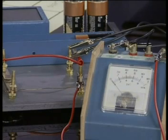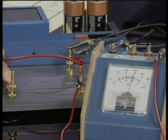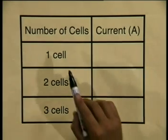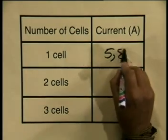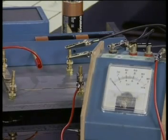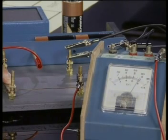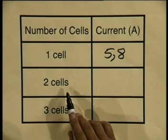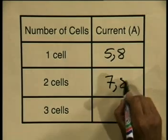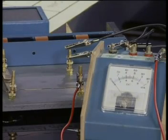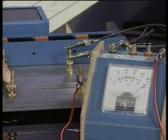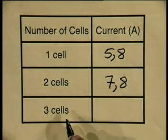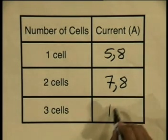I'm going to start by using one cell, I close the switch, and we can see that our current reading is round about 5.8 amperes. For our thicker copper wire using one cell, we have a reading of 5.8 amperes. Now I've placed two cells into my electrical circuit, closing the switch, and we have a reading of about 7.8 amperes. For two cells in series, we have a reading of approximately 7.8 amperes. Now we have three cells in series. I close the switch, and a reading that's gone just about off the scale, but approximates at 10 amperes. For three cells in series, my current reading is 10 amperes.